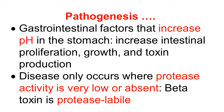There is growth, multiplication, and toxin production by Clostridium perfringens type C. It is observed that disease occurs only where protease activity is very low or absent, because protease digests the beta-toxin. Beta-toxin is protease-labile, so when protease activity is very low or absent, the disease will occur. This is an established fact.